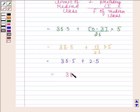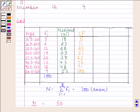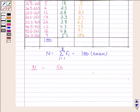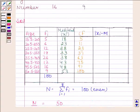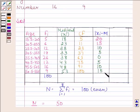So the median of the given data is 38. Now we will find |Xi − M| for each class. In the first row, Xi is 18 and M is 38, so 18 − 38 = −20, and |−20| = 20. Then 23 − 38 = −15, and |−15| = 15. Similarly, we have filled the other values of |Xi − M| for all rows.